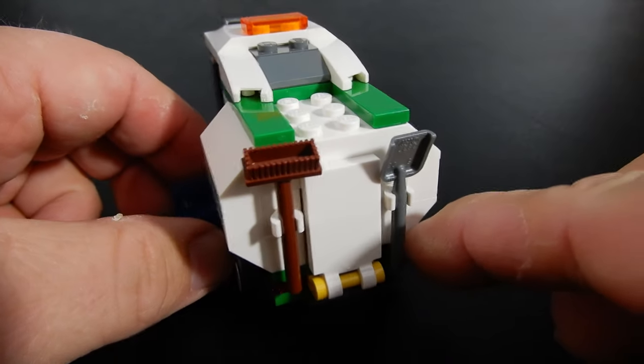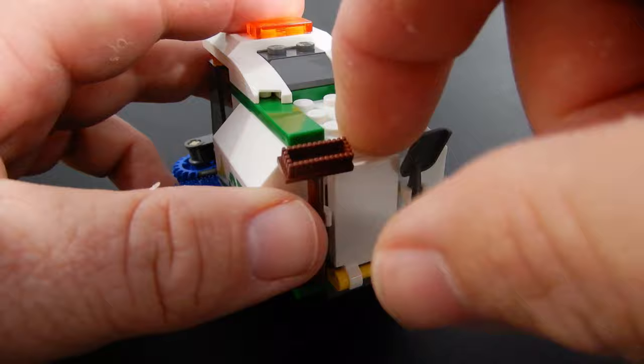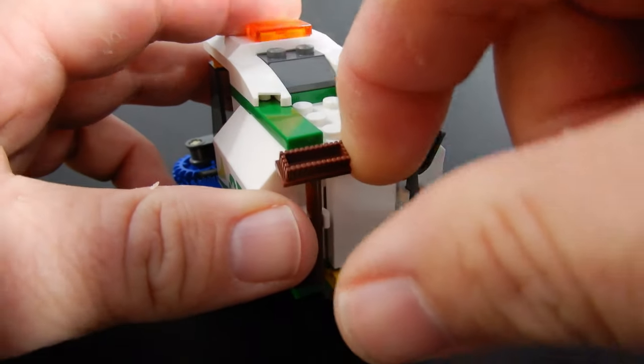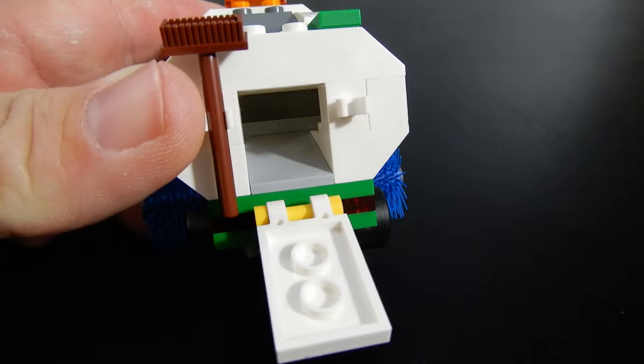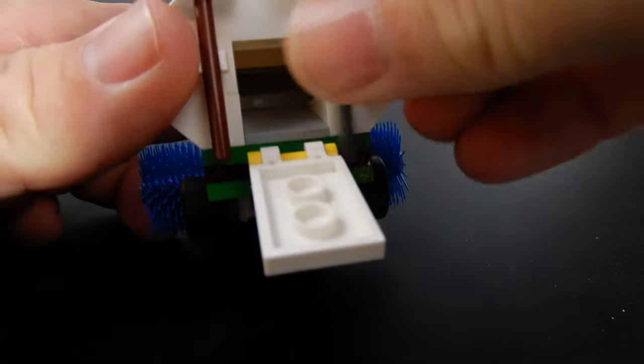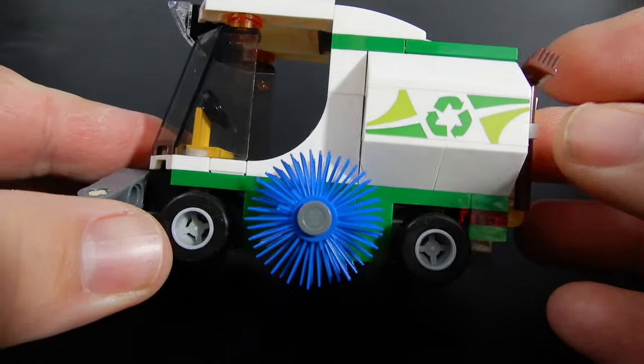At the back, we have a couple of clips for some tools. We have a shovel and a broom, and then this little door opens up. There we go. And there's just a little bit of room back there. You can empty some garbage or something, I suppose. And the other side is pretty much the same.